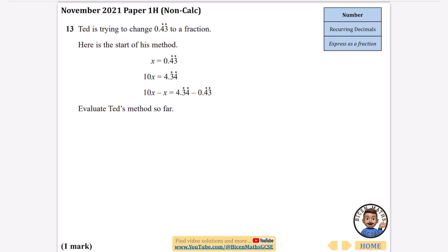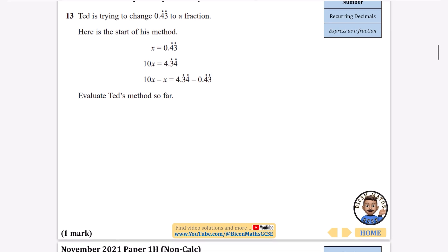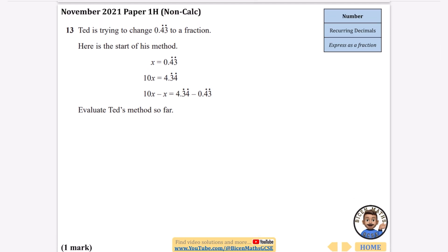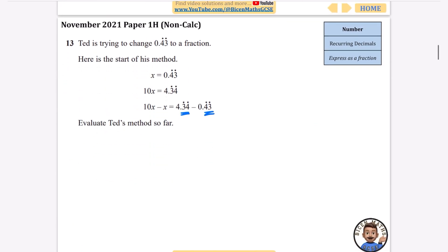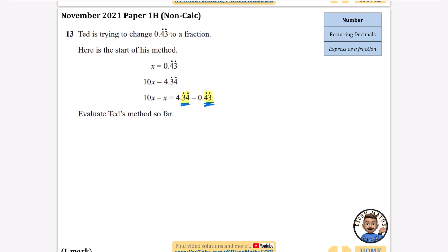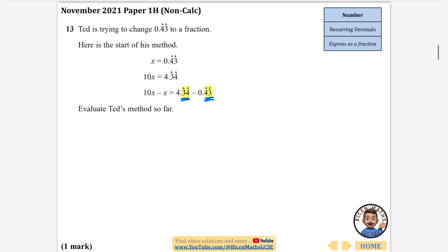Ted is trying to change 0.43 recurring to a fraction. Here is the start of his method: he's got x, he's got 10x, and then he's subtracted them. Evaluate Ted's method so far. Well, his isn't going to work because he's trying to do 4.34 recurring minus 0.43 recurring. The way we did it in the previous question was we made it such that these numbers were exactly the same as each other so they would eliminate. In his method, because of the 3.4 recurring and 4.3 recurring, the decimals are not going to eliminate.